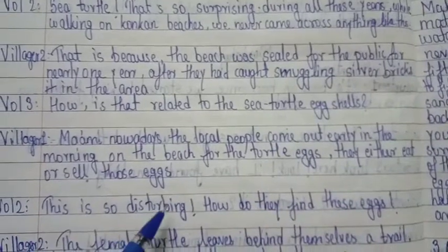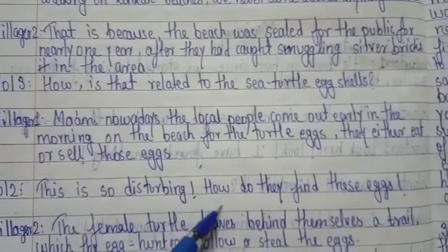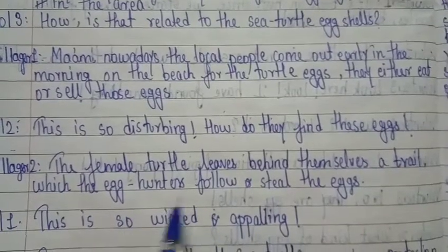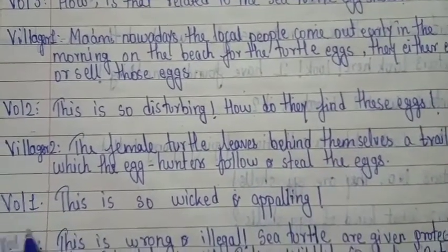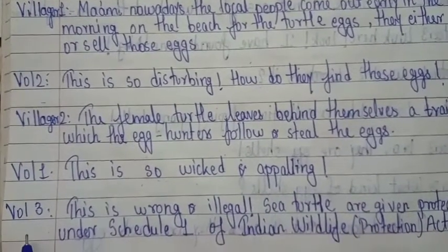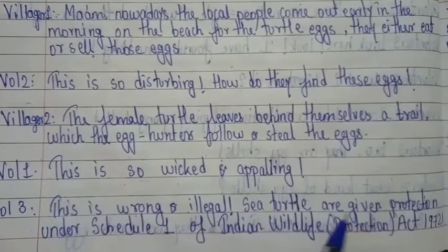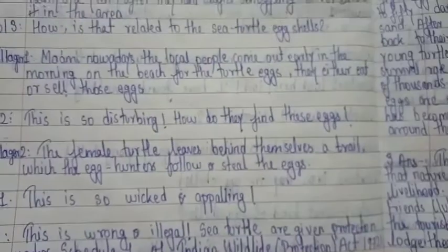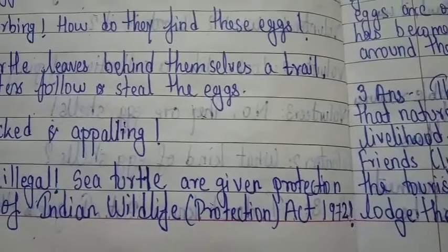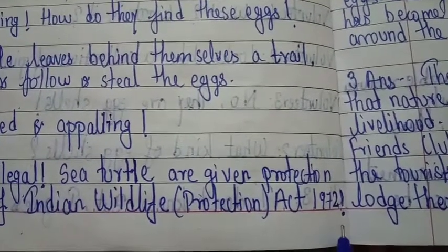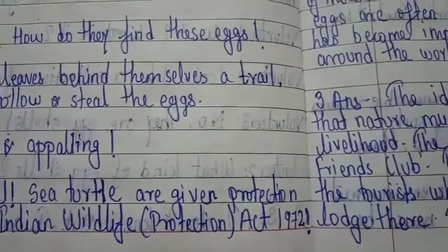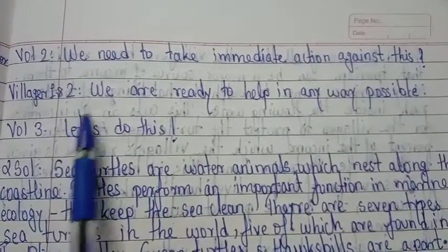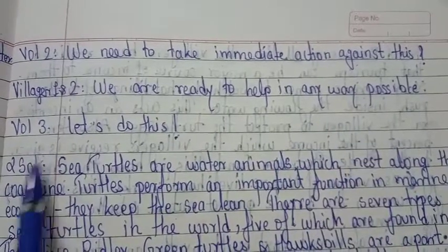Volunteer 2: 'This is so disturbing. How do they find these eggs?' Villager 2: 'The female turtle leaves behind a trail which the egg hunters follow and steal the eggs.' Volunteer 1: 'This is so wicked and appalling.' Volunteer 3: 'This is wrong and illegal. Sea turtles are given protection under Schedule 1st of the Indian Wildlife Protection Act, 1971.' Volunteer 2: 'We need to take immediate action against this.' Villager 1 and 2: 'We are ready to help in any way possible.' Volunteer 3: 'Let's do this.'